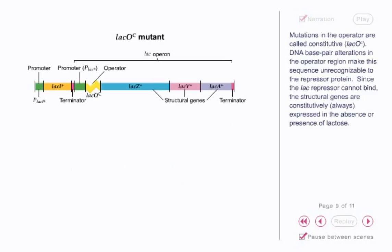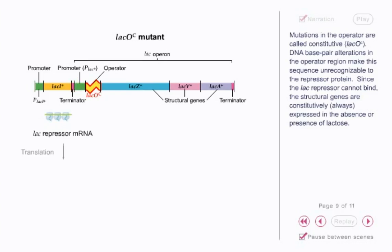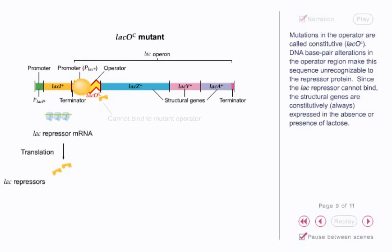Mutations in the operator are called constitutive. DNA base pair alterations in the operator region make this sequence unrecognizable to the repressor protein. Since the lac repressor cannot bind, the structural genes are always expressed in the absence or presence of lactose.